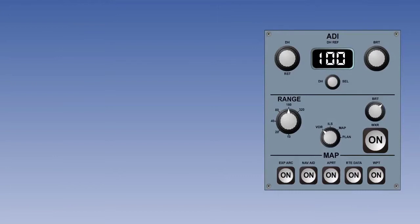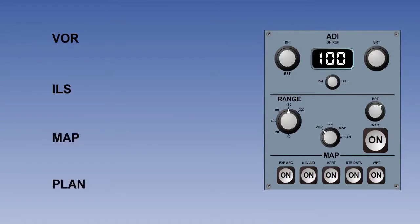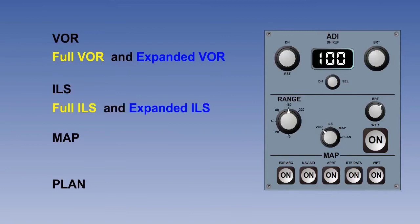By means of four principal display modes, which can be manually selected, a substantial amount of flight information can be shown or overlaid. The four principal display modes are VOR, ILS, Map, and Plan. VOR mode can be further subdivided into Full VOR mode and Expanded VOR mode. Similarly, ILS mode can be subdivided into Full ILS mode and Expanded ILS mode. We will look at all the modes in turn this lesson.